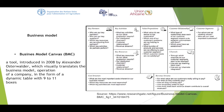Customer relationships is a very important block. What type of relationships does each customer segment expect to establish and maintain with us — that is, the business? Which ones have we established as a business? Under the customer segment block: for whom are we creating value, and who are our most important customers? It's like a stakeholder mapping — you look at your allies, your competitors, neutral people, the most valuable customers, and customers who have more influence.